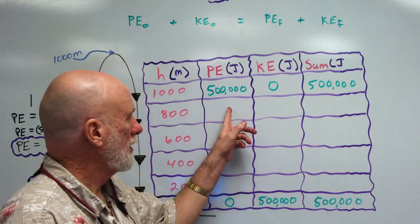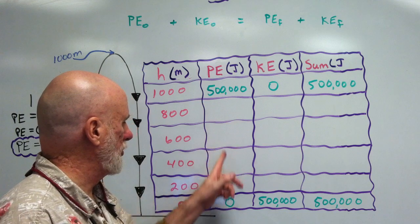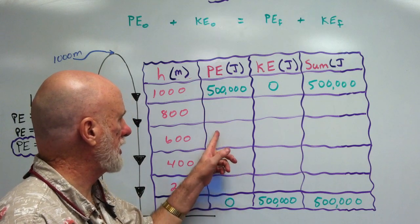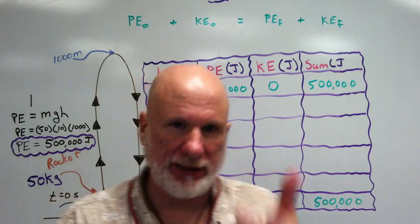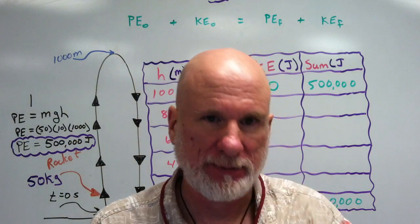So, I want you to now do 200, 400, 600, and 800. Do that, and I'll fill that in and see what happens when you get back. Be right back.